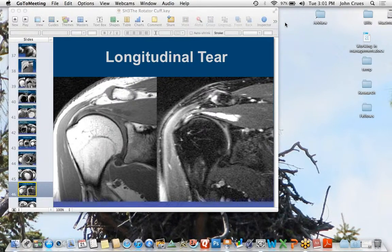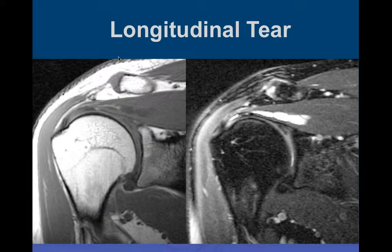Yesterday we talked about rotator cuff disease, a little bit of pathophysiology, and about partial tears of the rotator cuff, especially the supraspinatus tendon. Now I'd like to continue that discussion about interstitial tears, which we talked a little bit about before.